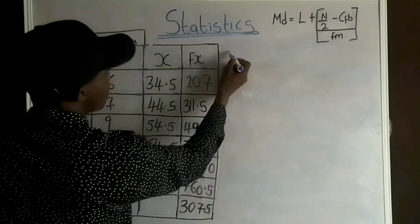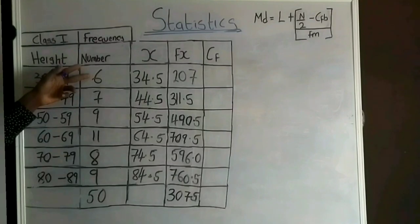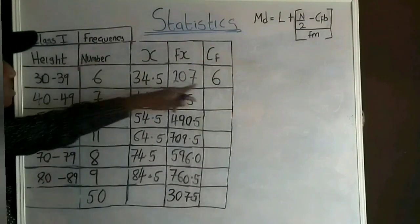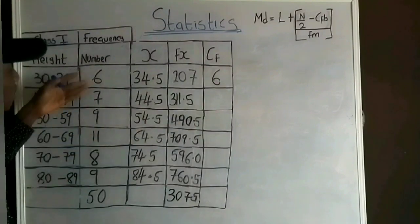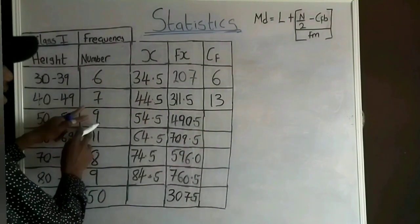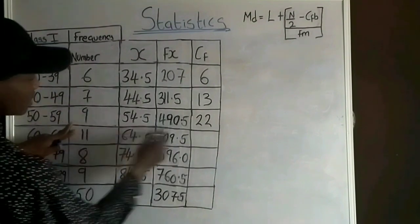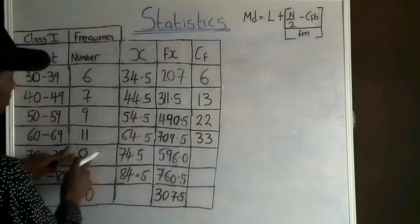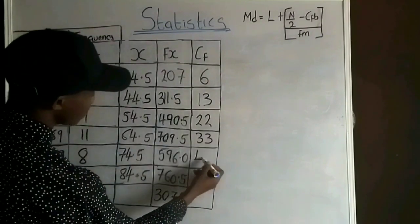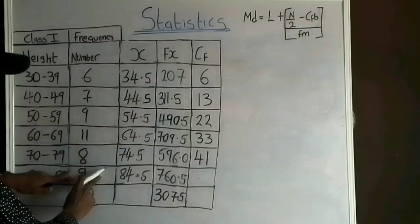Before using the formula, I need the cumulative frequency. The cumulative frequencies are: 6, then 6+7=13, then 13+9=22, then 22+11=33, then 33+8=41, then 41+9=50.